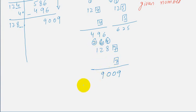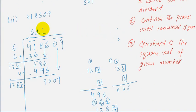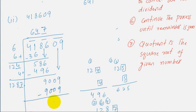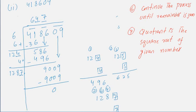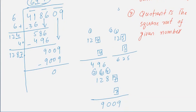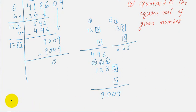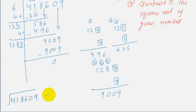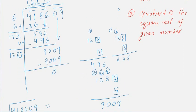So we choose 7 here and the same number in the quotient. We get 9009, which cancels out, and our remainder becomes 0. Therefore, the square root of 418609 is equal to 647.